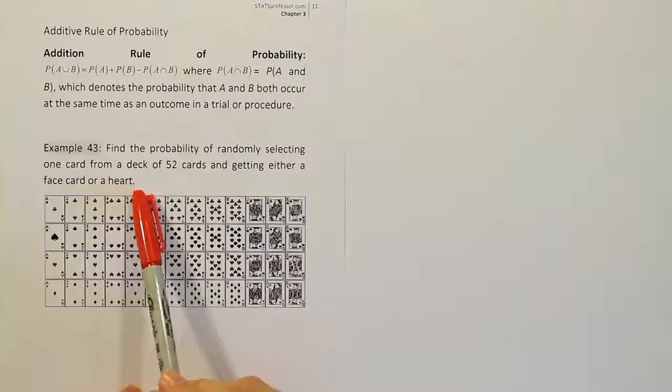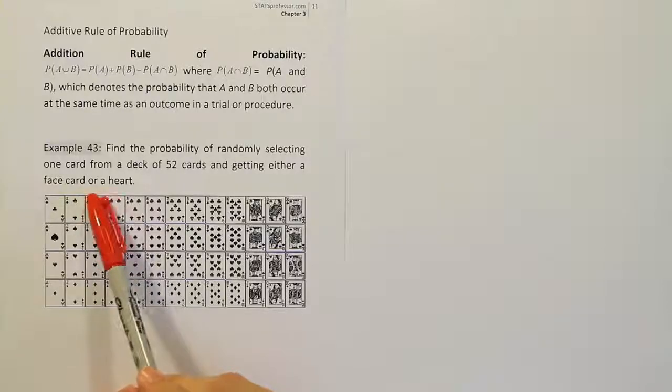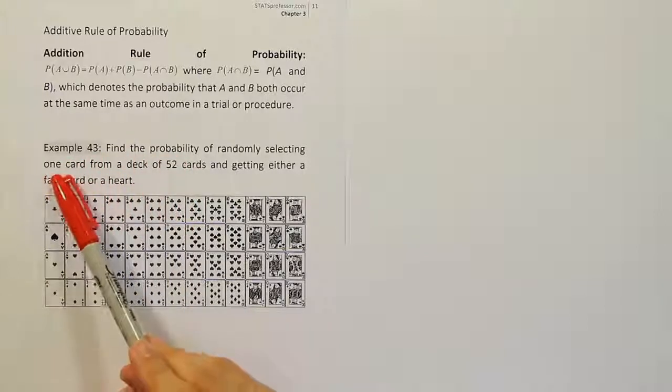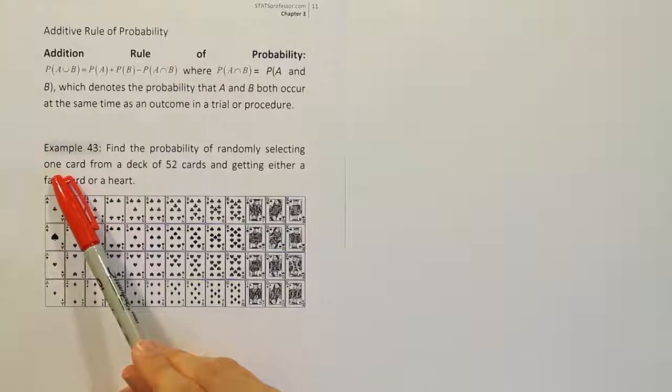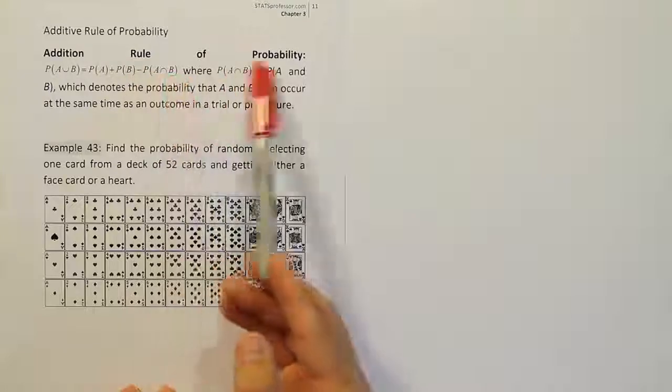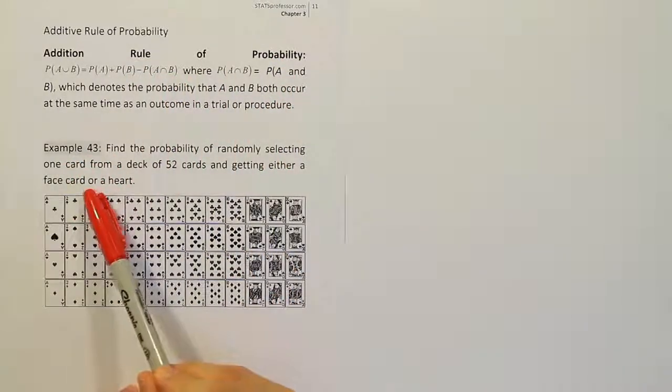So our extra keyword is this word, OR, believe it or not. Find the probability of randomly selecting one card. So it's a probability problem. We're selecting one thing. This is generally going to leave us with three options. We've only covered two of them so far. The first being basic probability, the second being the addition rule of probability. But the addition rule has this word, OR.